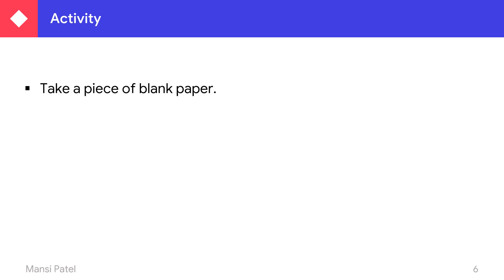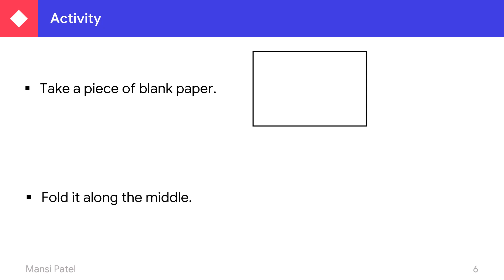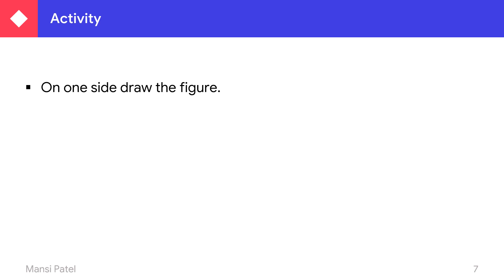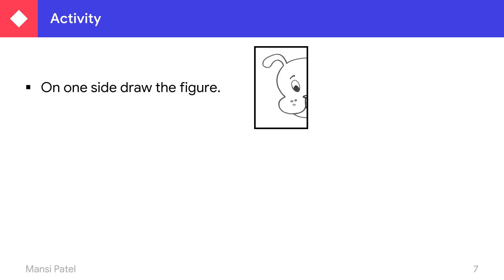Let us do one activity. In this activity, you have to make one mask. First, what you have to do: take a piece of blank paper like this. Then fold it along the middle — you take this blank paper and fold that blank paper from the middle side. So it looks like this. Then on one side, draw the figure. If you want to make the mask of an animal, then just draw half portion of that shape, half of that figure.